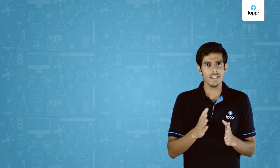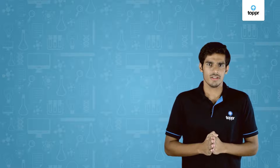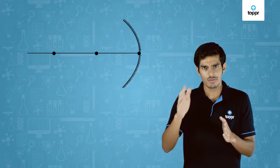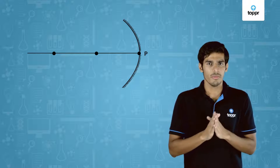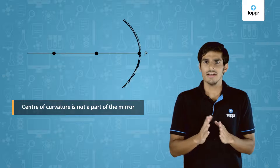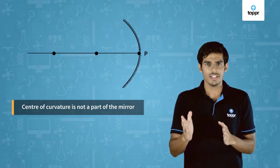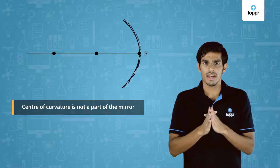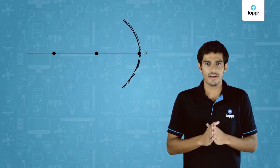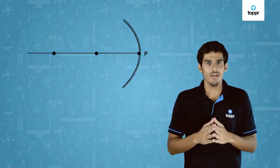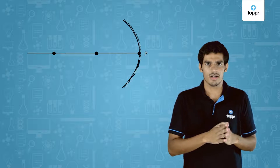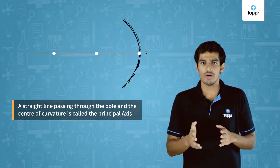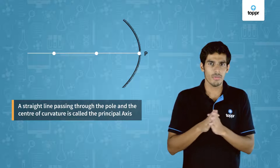Let's have a look at some basic terms related to spherical mirrors. The point at the center of the reflecting surface of a spherical mirror is called the pole, represented by P. The reflecting part of a mirror is part of a sphere, and every sphere has a center point called the center of curvature, represented by C. Note that the center of curvature is not part of the mirror and lies away from the reflecting surface. The radius of the sphere of which the spherical mirror is a part is called the radius of curvature, represented by R. A straight line passing through the center of curvature and the pole is called the principal axis, which is the normal to the mirror at its pole.